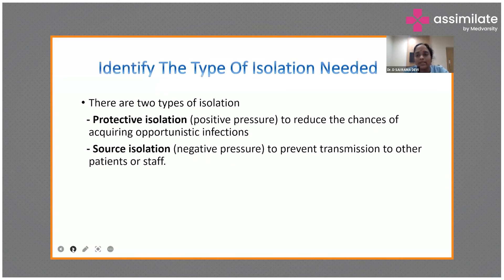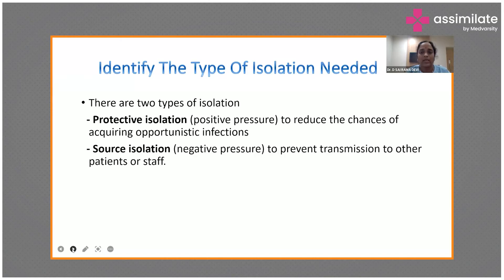What type of isolation is needed? There are two types: positive pressure isolation and negative pressure isolation. In positive pressure isolation, the pressure inside the room is maintained above atmospheric/surrounding pressure, so bacteria or contaminated air from outside cannot enter — this protects the patient from getting infected from external sources. Positive pressure isolation is used for immunocompromised patients.